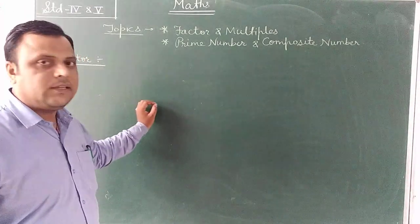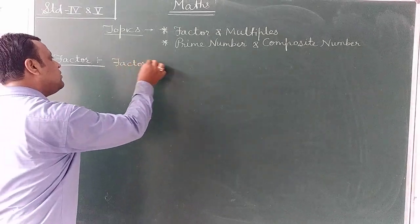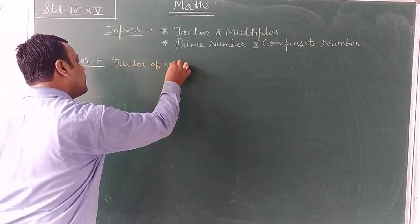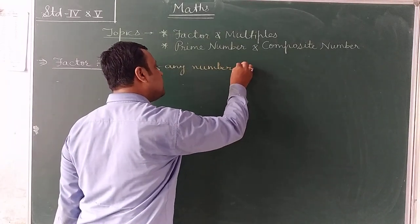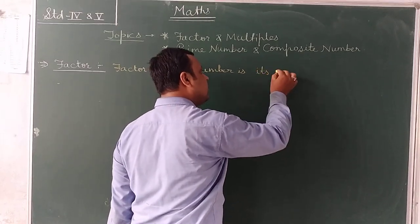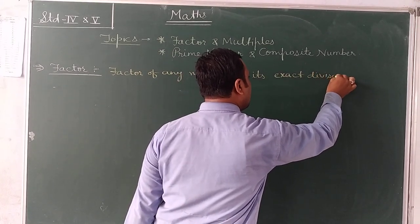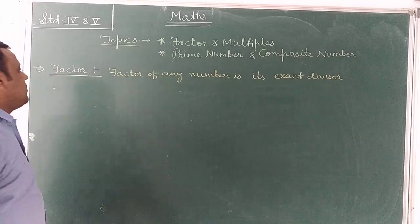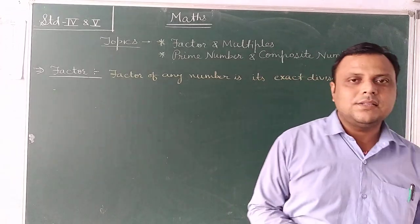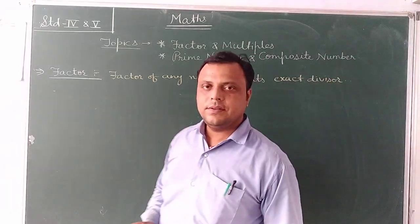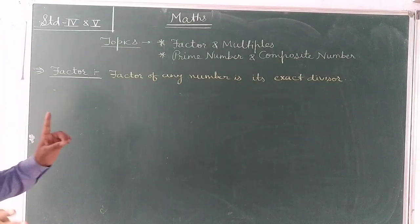Now I am going to write the definition of factor. Factor of any number is its exact divisor. It means when we divide any number by another number and it divides exactly, then we say the number that divides is called a factor.